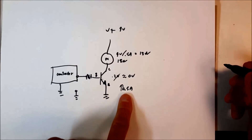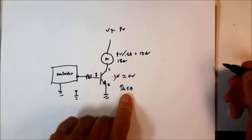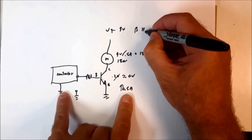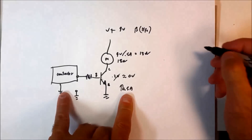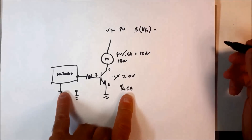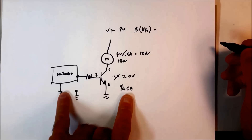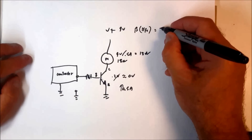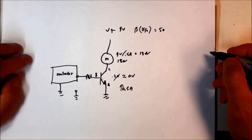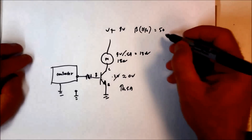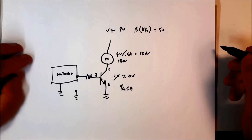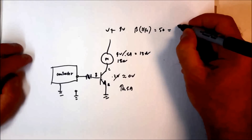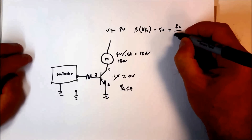We need to know one more thing to solve a problem like this: we need to know what our beta or H_FE of the transistor is. In this particular case, if we're going to use something like a 2N2222, we're going to say that the beta is approximately 50. This term — beta, or the DC current gain — is really your collector current over your base current.